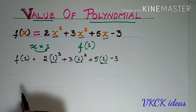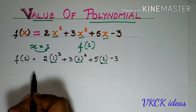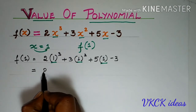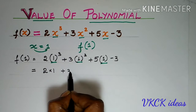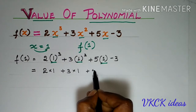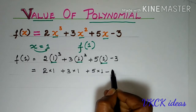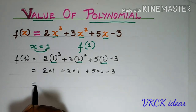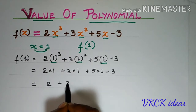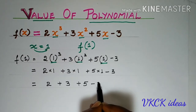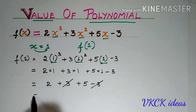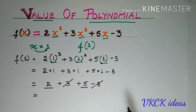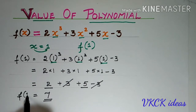Similarly, if there is any other variable like y, you will have to replace y. Now we will simplify. 2 × (1³) = 2, 3 × (1²) = 3, and 5 × 1 = 5, minus 3. We have +3 and -3 which get cancelled, and we are left with 2 and 5. If you add those, it becomes 7. So, f(1) = 7.